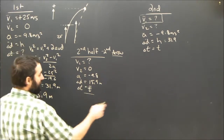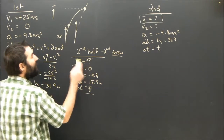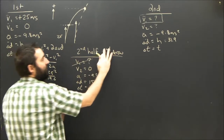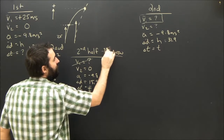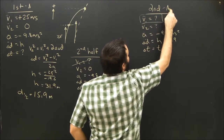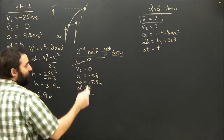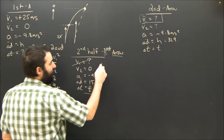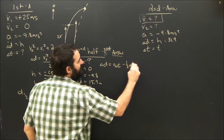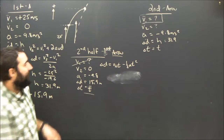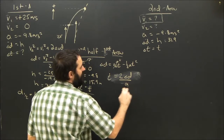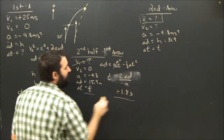Now it's just a Big Five problem. I'm looking at the second half of the first arrow. V1 at the halfway point is unknown — I'll ignore it. V2 is zero at the top. A is negative 9.8. D is 15.9 meters. I want T. Using equation 4: ΔD = V2·T minus one-half·A·T². Since V2 is zero, T equals the square root of 2D over A, which works out to be 1.8 seconds.